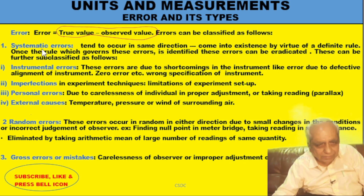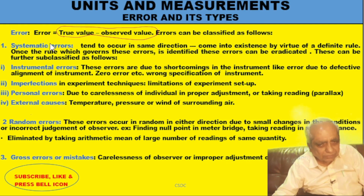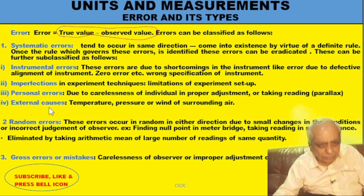There is a certain rule we are not able to follow. Like in a calorimeter experiment, we assume there is no loss of heat between the calorimeter and surroundings, but there is an exchange of heat. So there is always some loss of heat energy from the calorimeter, and the error is always in the direction of heat loss, which we assumed to be zero. In random errors, the errors occur in either direction — sometimes positive, sometimes negative — due to incorrect judgment of the observer or due to certain variation in the instrument.